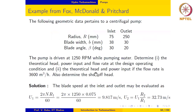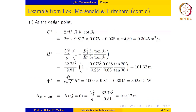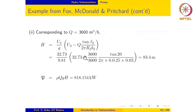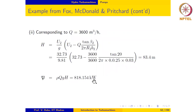For a flow rate of 3600 m³/hour (1 m³/s), substituting into the head expression with vθ₁ neglected gives H = 83.4 m and power input P = 818.154 kW.